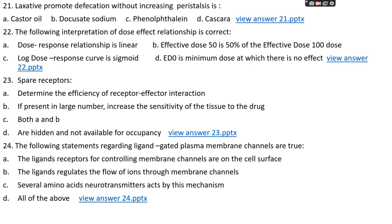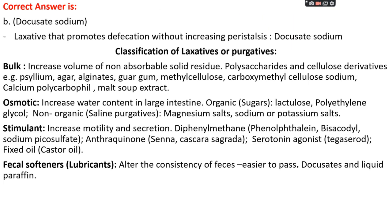Question number twenty-one: laxatives that promote defecation without increasing peristalsis — option A: castor oil, option B: docusate sodium, option C: phenolphthalein, or option D: cascara. The right answer is option B, docusate sodium. There are four types of laxatives: bulk laxatives, which increase the volume of non-absorbable solid residues — examples include psyllium, agar, alginate, guar gum, methylcellulose, carboxymethylcellulose, and malt soup extract.